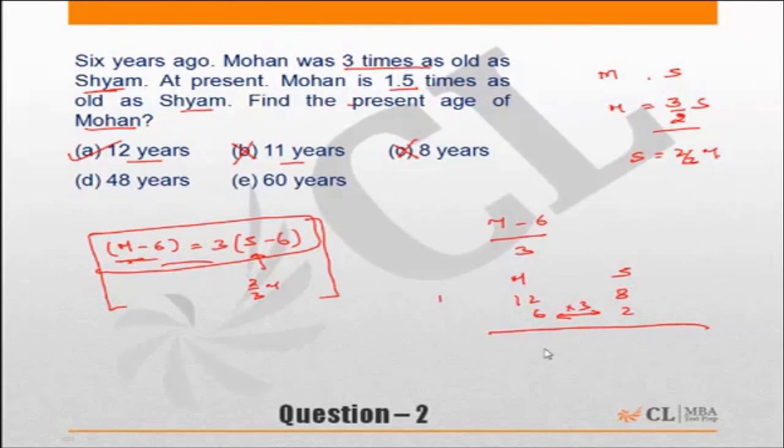If you want you can check any other choice also. For example, if you assume Mohan's current age is forty-eight, then Shyam's current age should be thirty-two, two-thirds of Mohan's age. Six years ago Mohan's age would have been forty-two and Shyam's age would have been twenty-six. Now this is not three times, hence this cannot be the answer. So correct answer is choice A.